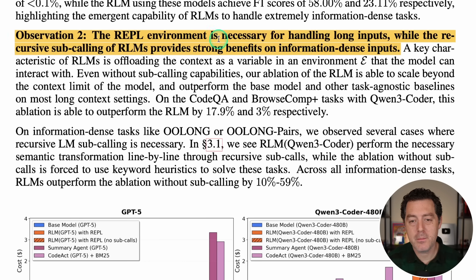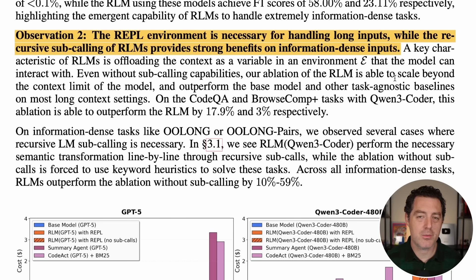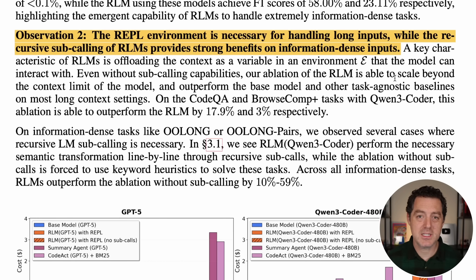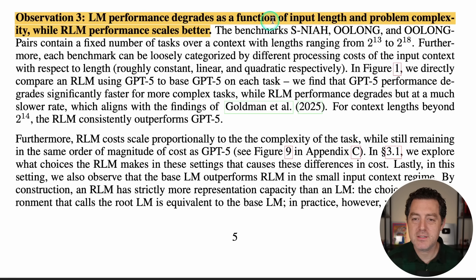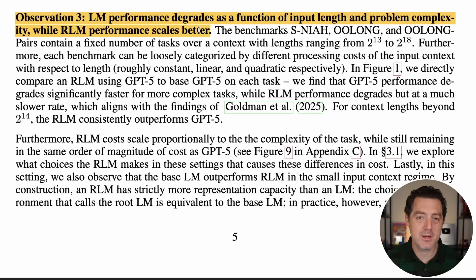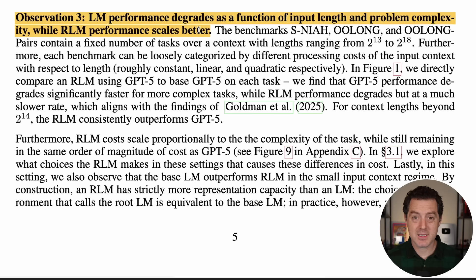Observation two: the REPL environment is necessary for handling long inputs, while recursive subcalling provides strong benefits on information-dense inputs. Just offloading the long prompt outside the context window is good, but for complicated prompts where you need to touch many different parts, the recursive element is just as important. Observation three: language model performance degrades as a function of input length and problem complexity, while RLM performance scales better. Without RLM, models struggle as complexity and context windows increase; with RLM, it scales really well.